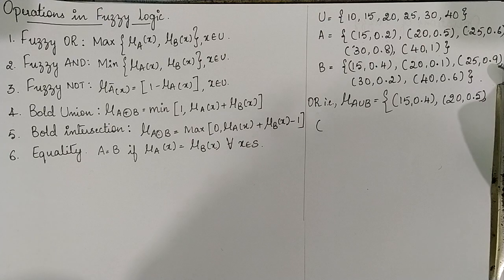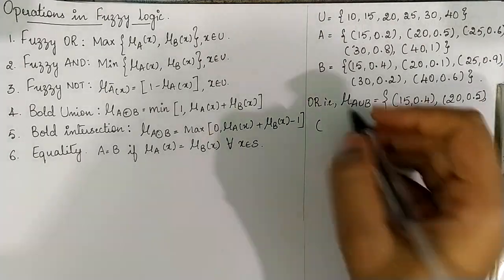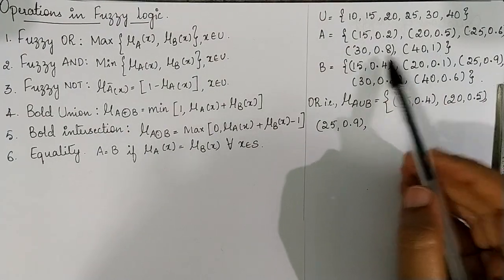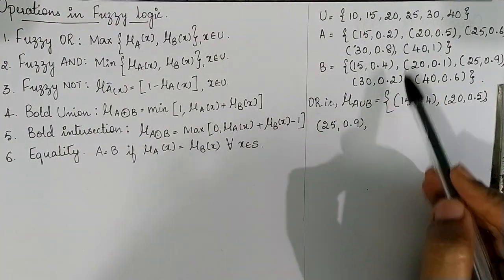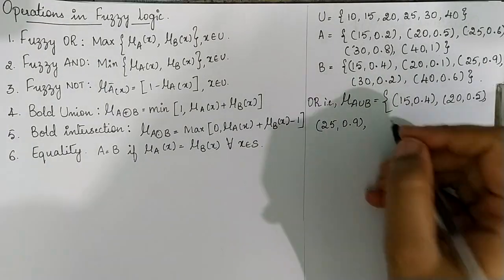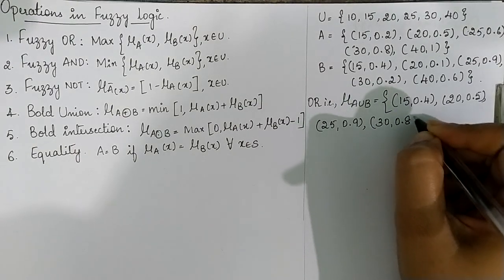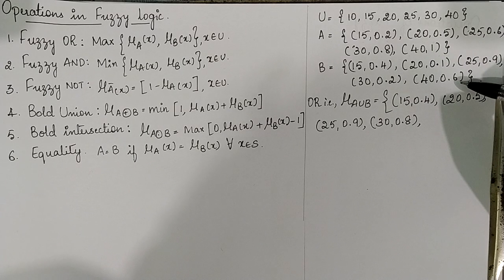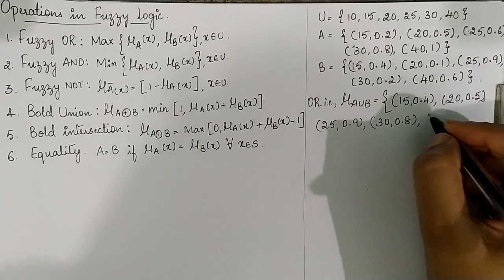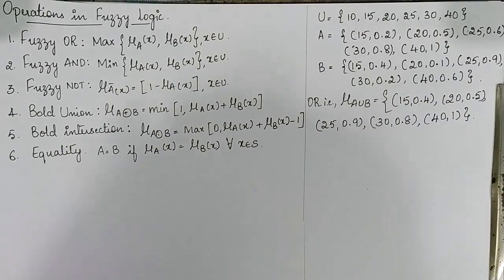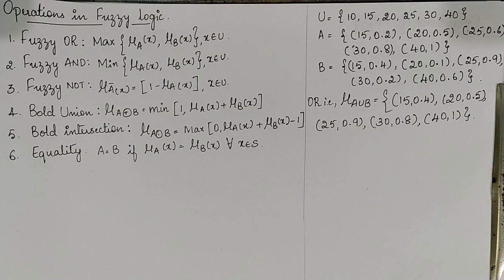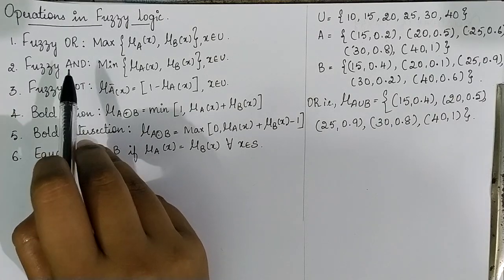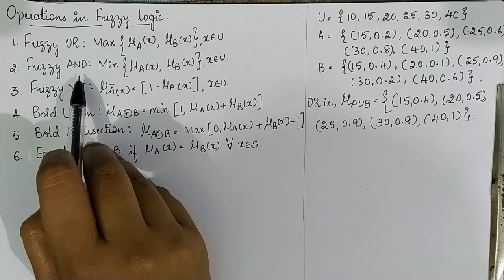Next compare 25→0.6 and 25→0.9 — 0.9 is the maximum, hence 25→0.9. Next compare 30→0.8 and 30→0.2 — 0.8 is the maximum, hence 30→0.8. Next compare 40→1 and 40→0.6 — 1 is the maximum, hence 40→1. This is about the fuzzy OR operation.